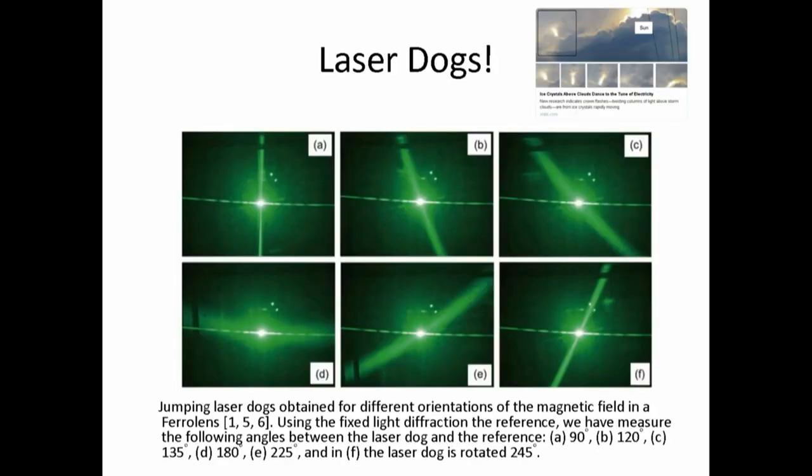In this image, we're shooting a green laser into a ferrocell and using different applied magnetic fields to rotate the diffraction flare or the wing. Basically, the laser has not moved. The only thing that has changed is the applied field, and we can rotate that flare anywhere we want, 360 degrees.